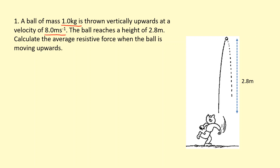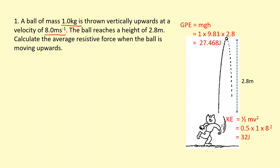We're going to use energy. At the bottom, when the ball leaves the boy's hand, it has kinetic energy because it's moving at eight meters per second. We can calculate the kinetic energy there: 32 joules. And at the top, some of that kinetic energy has turned into gravitational potential energy, mgH. Calculating that with the height of 2.8 meters gives 27.468 joules.